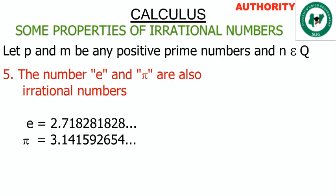Property five: the number e, called the exponential, and pi are also irrational numbers. The value of e is 2.71828182... which is non-terminating and non-repeating in blocks. Pi equals 3.14159265... continuously, which also makes it an irrational number.